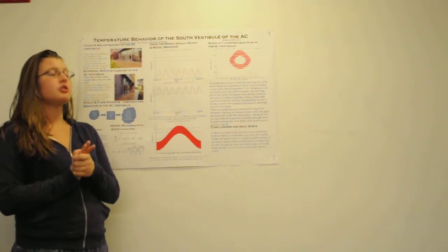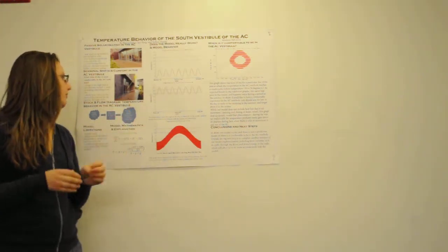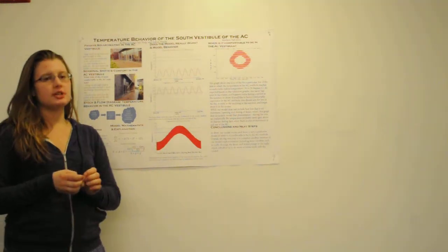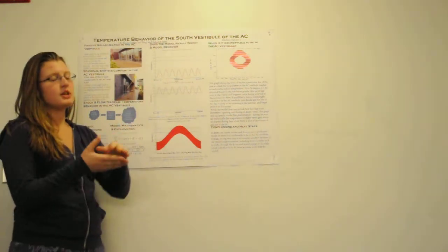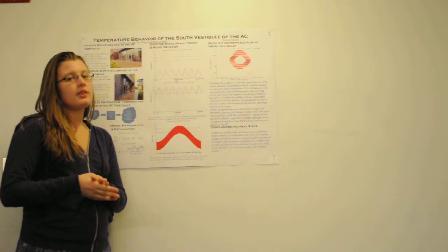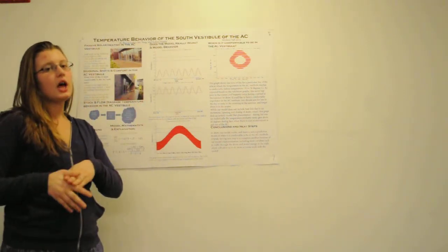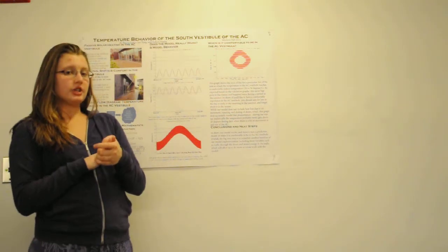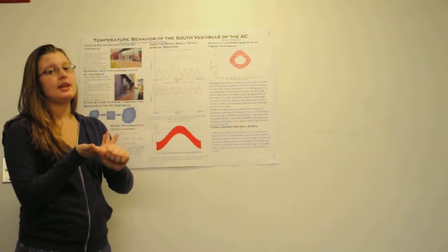There's a bunch of seasonal shifts that can be observed in this little vestibule. The change in the sun angle during the course of the day and the year means that more or less heating occurs in the vestibule. Additionally, the outside temperature varies over both the course of the day and the year. Those two mean that we actually have a very accurate model of both seasons and day and night cycle.